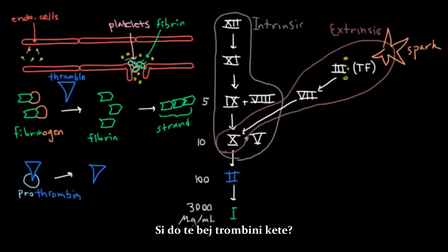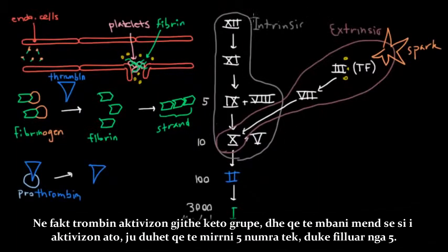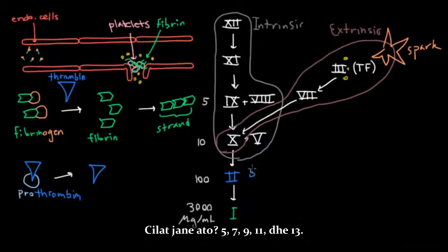And how will thrombin do that? Well, thrombin actually activates a whole bunch of these guys. And to remember the ones that it activates, you just need to take the five odd numbers starting at 5. So what is that? That's 5, 7, 9, 11, and 13.